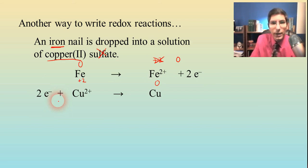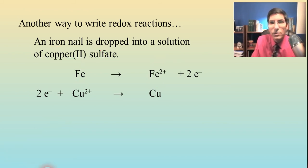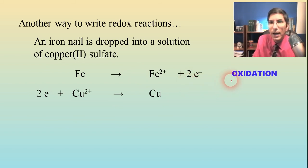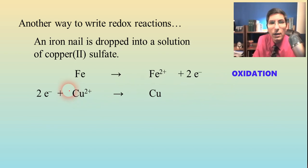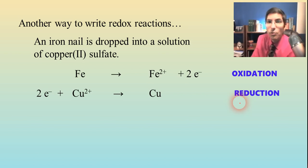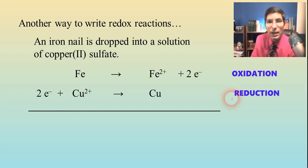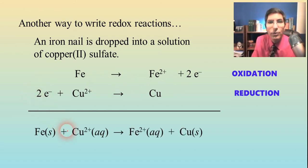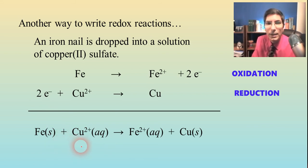We've written two half reactions. In the first one we're losing electrons — electrons appear on the product side — so that is oxidation. In the second one we're gaining electrons, so that is reduction. To get an overall balanced equation we add these two together, and the two electrons on the right cancel out with the two electrons on the left. This time the equation balanced itself.